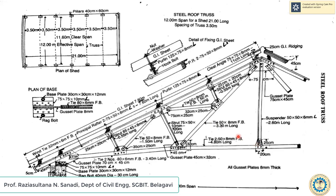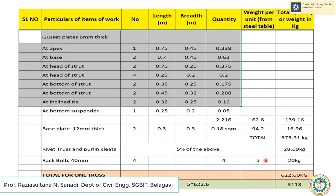At the inclined tie, the gusset plate is 32 x 25 cm. At the bottom suspender, dimensions are 25 x 20 cm. Adding all gusset plate quantities gives 2.216 m². Multiplying by the weight per unit for 8 mm thick plate from the steel table (62.8) gives a total quantity of 139.16 kg.